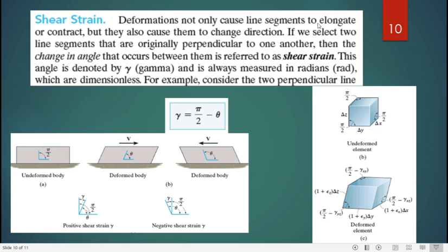Shear strain. Deformation not only causes line segments to elongate or contract, but they also cause them to change direction. If there is change in the orientation, angle is being changed, then it will be called as shear strain. Shear strain is defined as gamma equals 90 minus theta or pi by 2 minus theta. Here is undeformed, this is deformed and it is positive because the answer of this 90 minus theta will be positive. And in this case, theta is larger than 90, so answer will be negative. It will be called as negative gamma. You can see here in 3D undeformed element and this is deformed element.